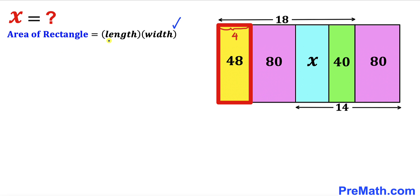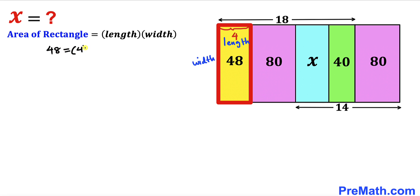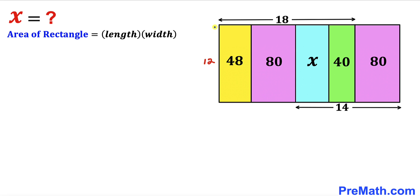Recalling the area of a rectangle formula: Area = Length × Width. For this yellow rectangle, the length is 4 cm and the area is 48 cm². So: 48 = 4 × w. Dividing both sides by 4, the width turns out to be 12 cm. So the side lengths of this yellow rectangle are 4 cm and 12 cm.